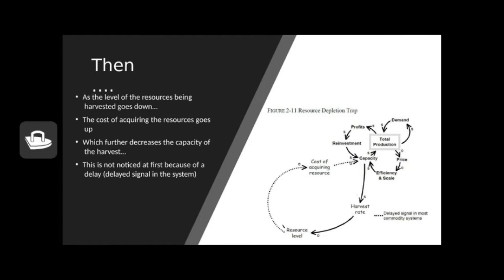As this resource level goes down however, the cost of acquiring the resource should go up. The problem is it takes a while to happen and people don't notice it. The dotted line indicates there's a delayed signal in the system. You don't see it right away, but the cost of acquiring the fish will go up and that will then drive the capacity down. This is a feedback loop that we need to make obvious to be able to make a decision about what we should do next.